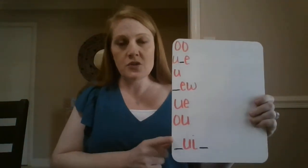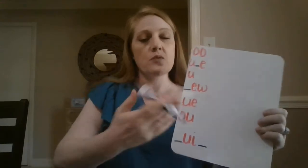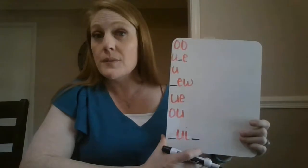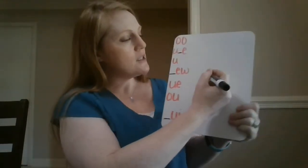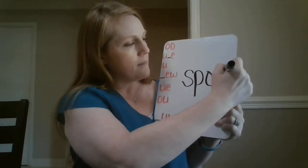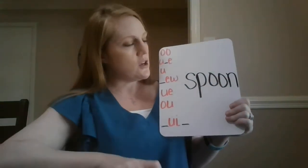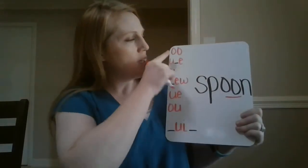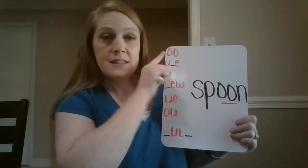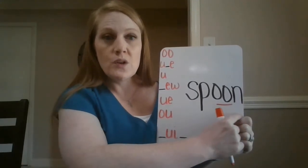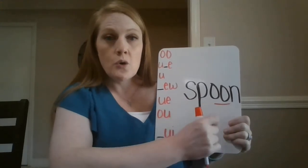We're going to do some more practice with those words. I have all of our OO spellings written on the side here, and I'm just going to practice writing to show you an example of each of the OO spellings in a word. On this word, I see a consonant blend SP, then I see OO. So I have SP, OO, N. This word is spoon. OO, and it has our OO spelling.